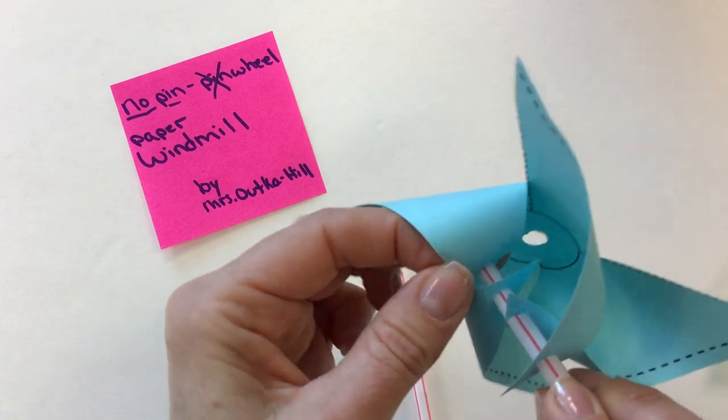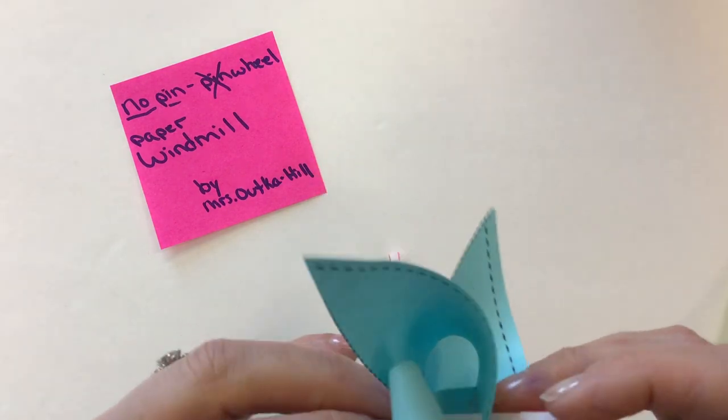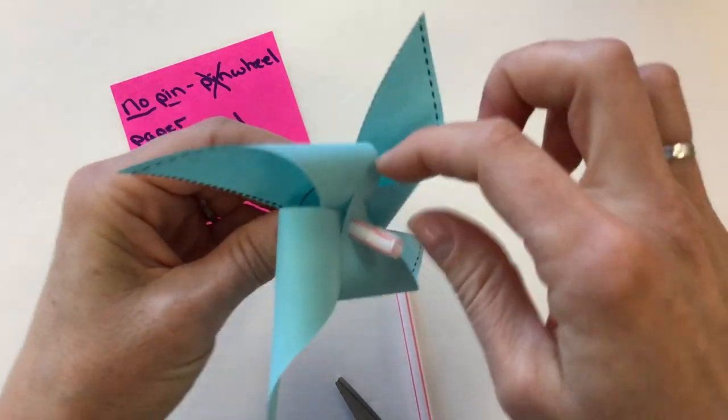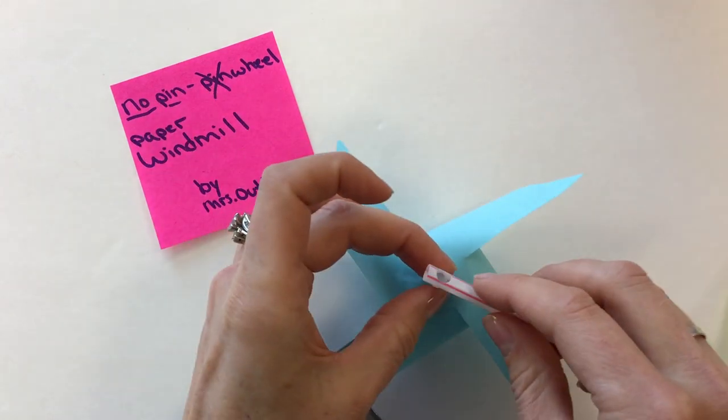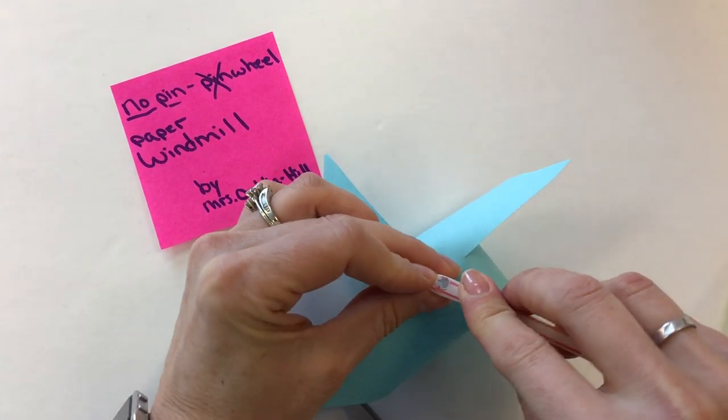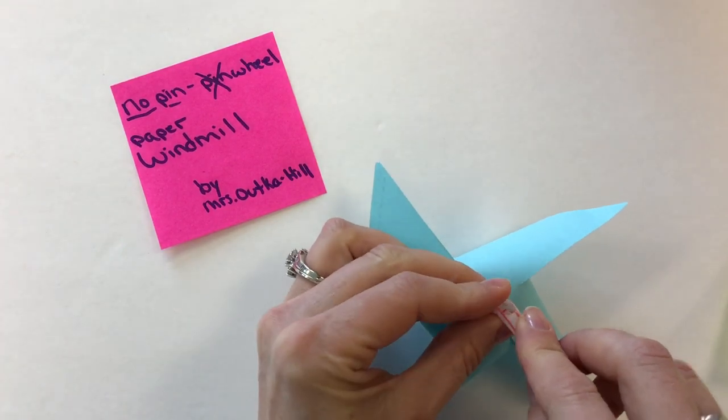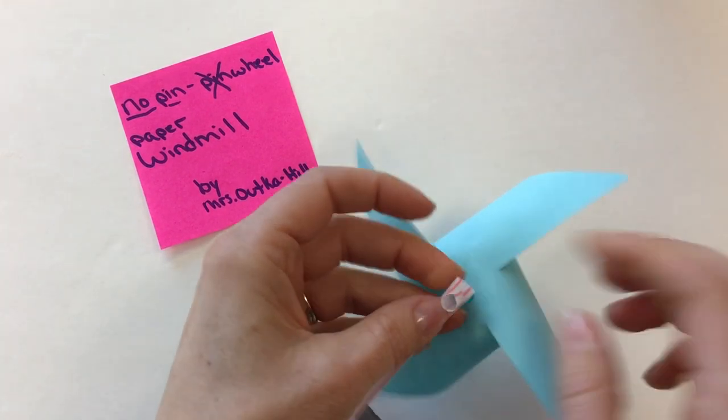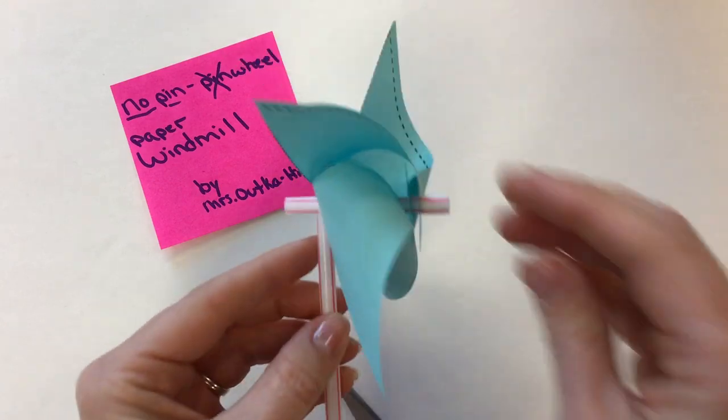And then the last hole goes through the center of the windmill. And I can push it all the way through so it looks like this. This is going to keep it from coming off. You can spread it out a little bit. And then the last piece goes through this hole. So the first time that you put these through all the holes are going to be a little tight. The more your windmill turns, the looser the paper will get. Okay, so this one is pretty tight. And then that's going to keep it all on.